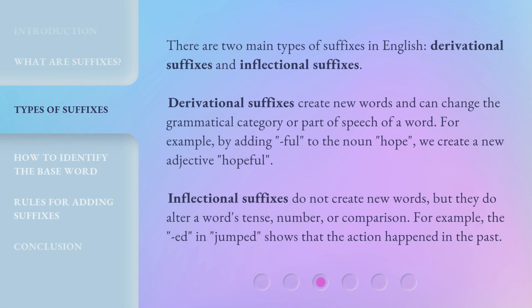There are two main types of suffixes in English: derivational suffixes and inflectional suffixes. Derivational suffixes create new words and can change the grammatical category or part of speech of a word. For example, by adding '-ful' to the noun 'hope,' we create a new adjective, 'hopeful.'